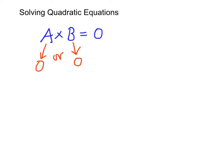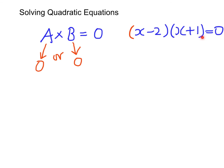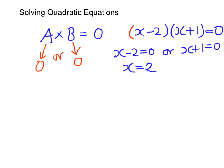Therefore, if we have an equation like this one — x minus two times x plus one equals zero — then either the first factor, x minus two, is zero, or the second factor, x plus one, equals zero. Therefore we can write x minus two equals zero or x plus one equals zero, giving us two answers: x equals two or x equals minus one.